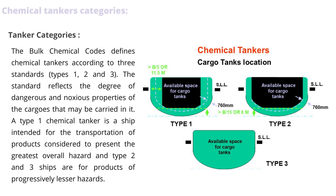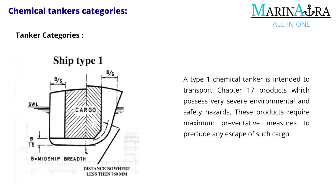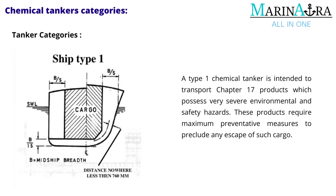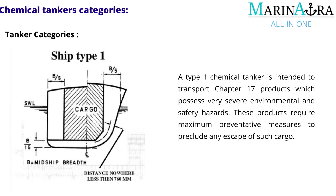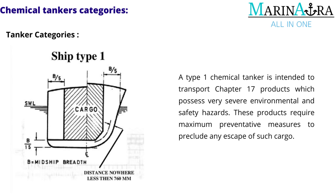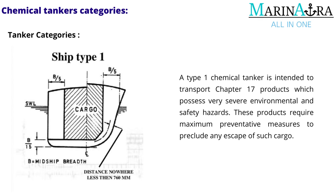A type 1 chemical tanker is intended to transport Chapter 17 products which possess very severe environmental and safety hazards. These products require maximum preventative measures to preclude any escape of such cargo.